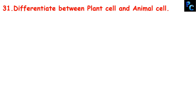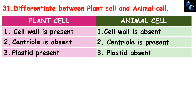What is the difference between plant cell and animal cell? In plant cells, the cell wall is present; in animal cells, the cell wall is absent. In plant cells, centriole is absent; in animal cells, centriole is present. Plastids are present in plant cells and absent in animal cells.